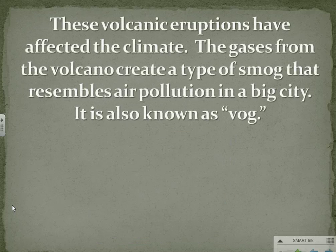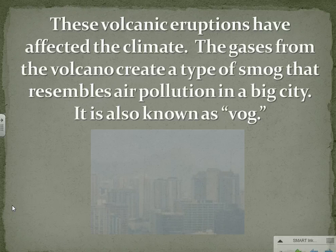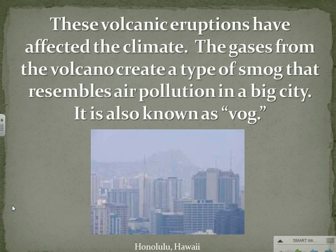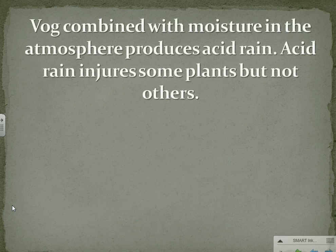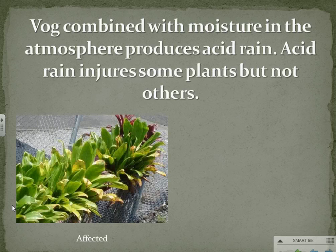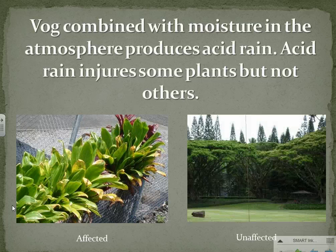These volcanic eruptions have affected the climate. The gases from the volcano create a type of smog that resembles air pollution in a big city, also known as VOG. VOG combined with moisture in the atmosphere produces acid rain. Acid rain injures some plants but not others.